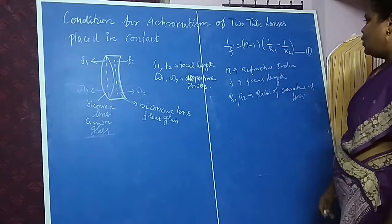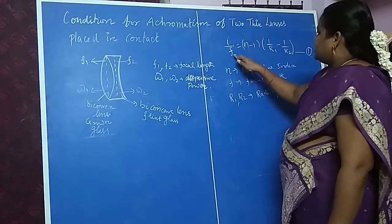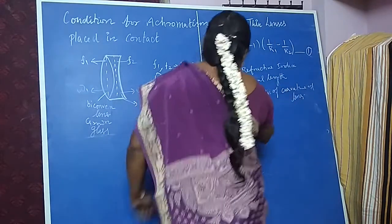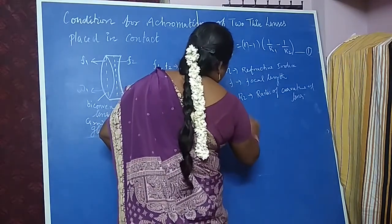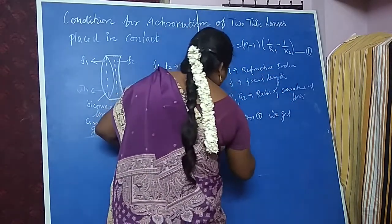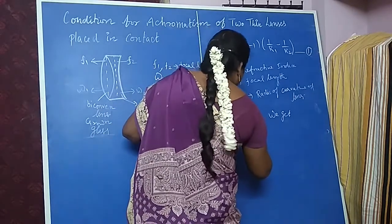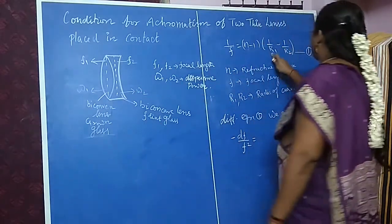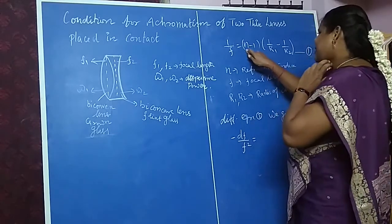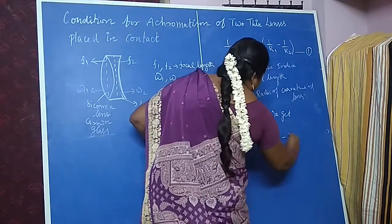Differentiating equation 1, because the refractive index varies with color, the focal length also varies with color. On differentiating, the constant term (1/R1 - 1/R2) remains, and we get: -dF/F² = dn(1/R1 - 1/R2). Take this as equation number 2.